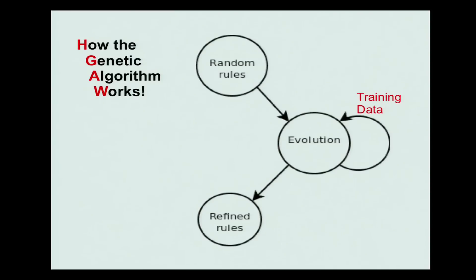Here's how genetic algorithms work. You use audit data, pick a set of random rules, create random rules, go through the evolution process, and then you end up with these refined rules.